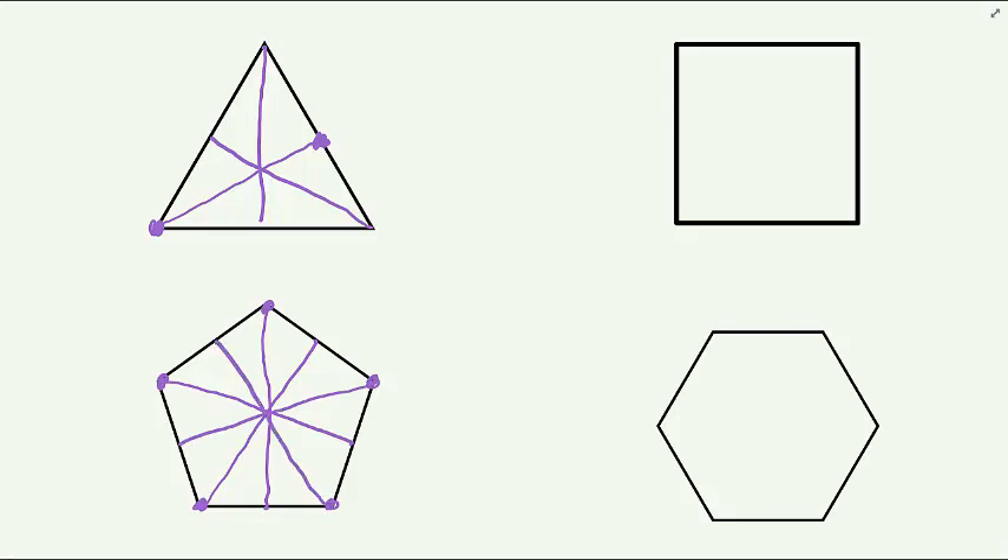However, when we try to connect the vertices of a square to the opposite side, we don't get lines of symmetry.